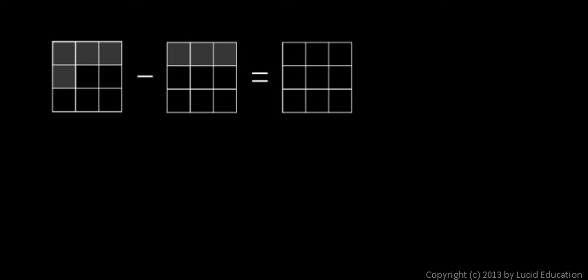The same concepts also apply to subtracting fractions. They have to be like fractions. In this case, we have a square divided into nine pieces, and you can see that four of those pieces are shaded. So this represents four ninths, this first diagram.